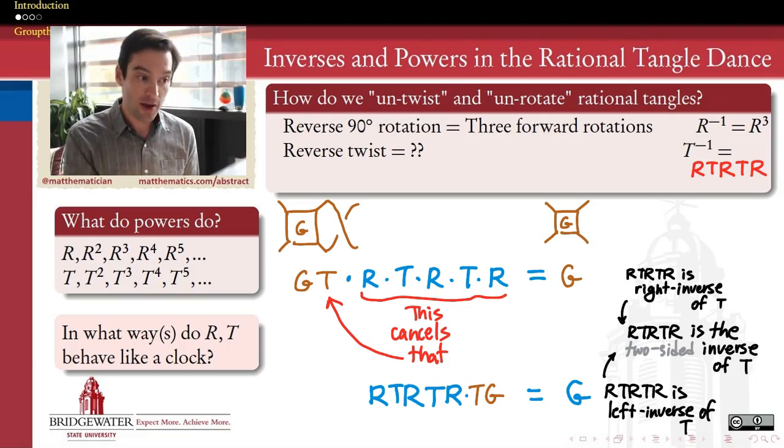So maybe ignore the word 'the' here, and we should think of it as just being an inverse of T. So what about the other properties of the algebra in the rational tangle world? How else do T's and R's interact with one another that we can say?